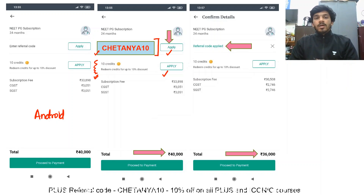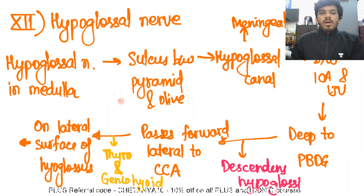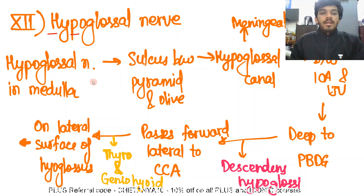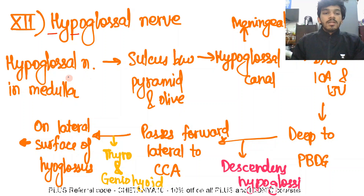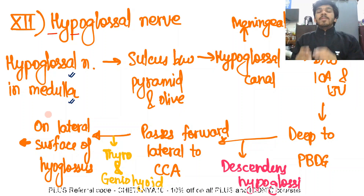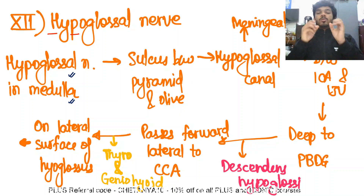Now let's talk about the hypoglossal nerve, the 12th cranial nerve — the last cranial nerve. The hypoglossal nerve arises in the medulla; there's a hypoglossal nucleus in the medulla. There is a sulcus between the pyramid and the olive on the anterior surface of the medulla, from where the hypoglossal nerve exits as rootlets. All those rootlets join to form the hypoglossal nerve. The exit is through what is known as the hypoglossal canal, which is a foramen in the skull.